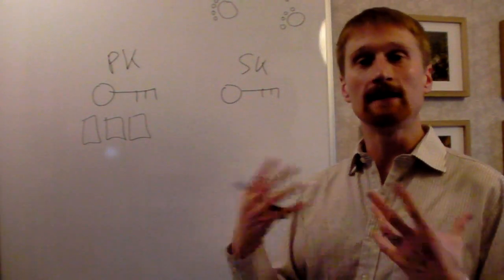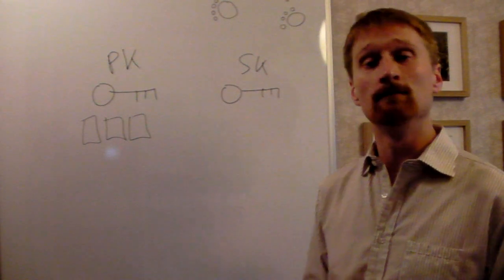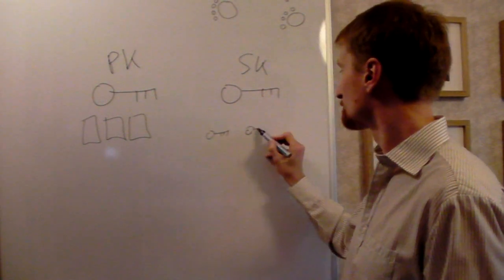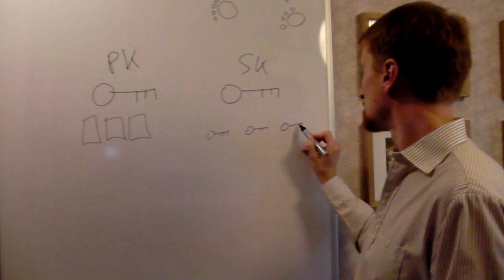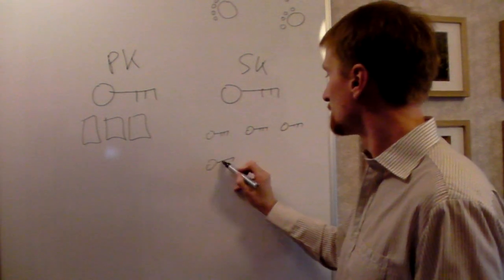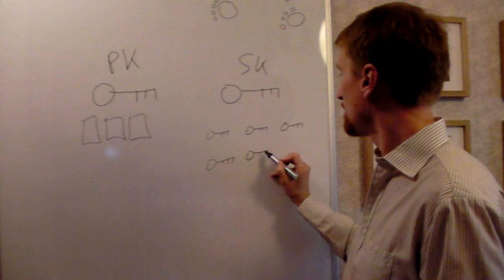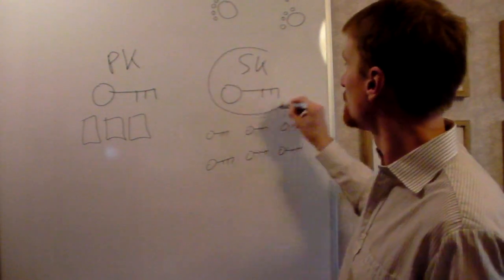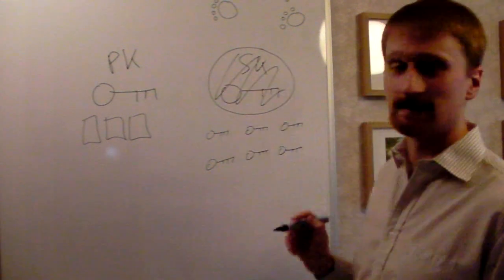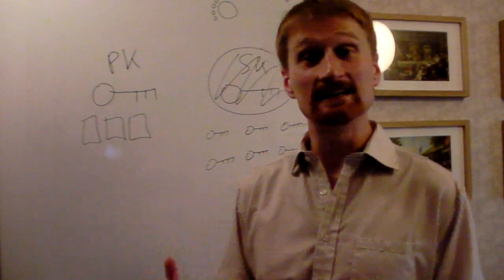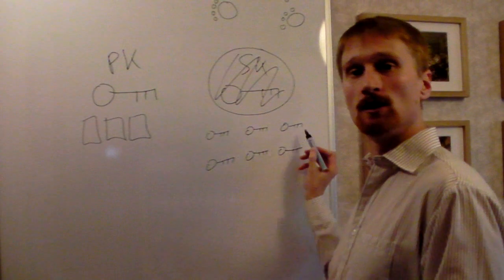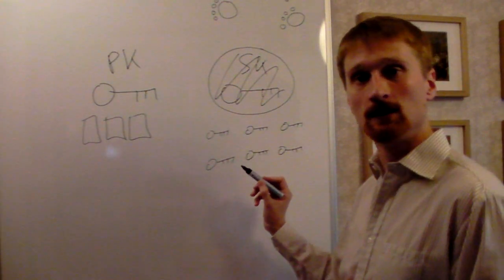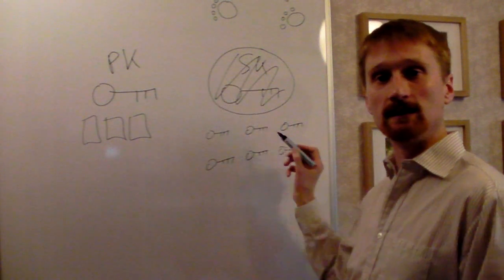Instead, the trusted parties execute a protocol, as it's called, to each create key shares such that the key shares make up this master secret key. So this master secret key doesn't actually exist—no one knows it, it's hidden. Only if you put all of these key shares together will they make up the secret key so that you can decrypt the encrypted votes.